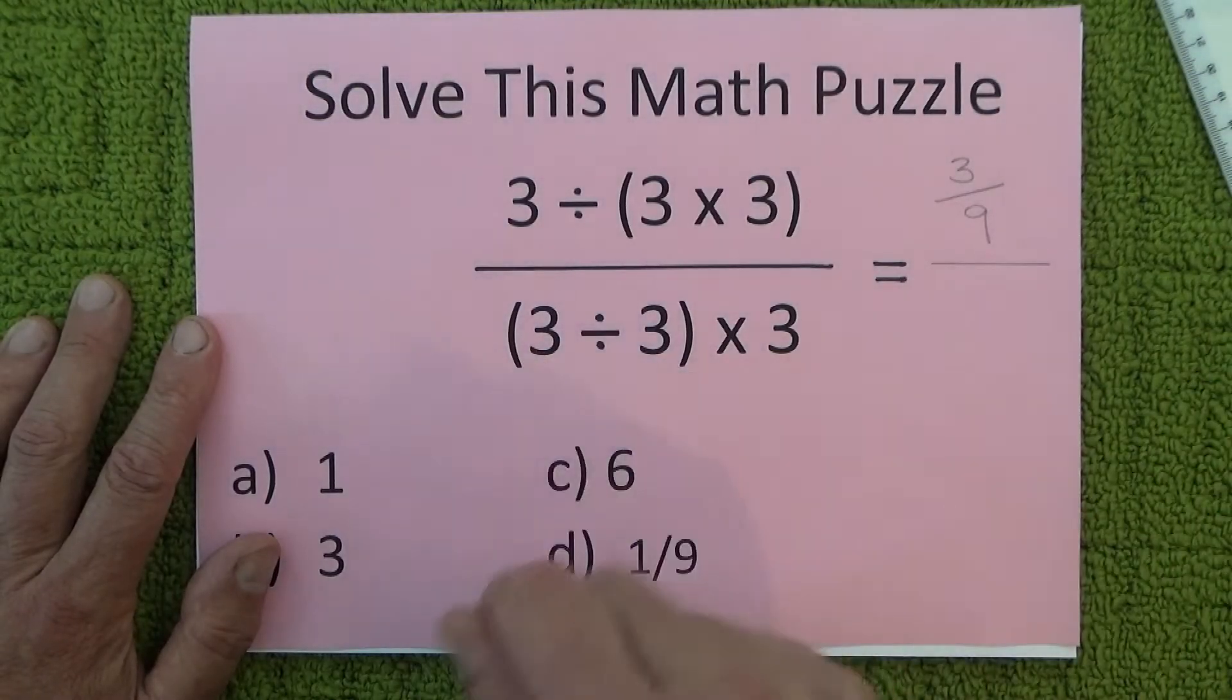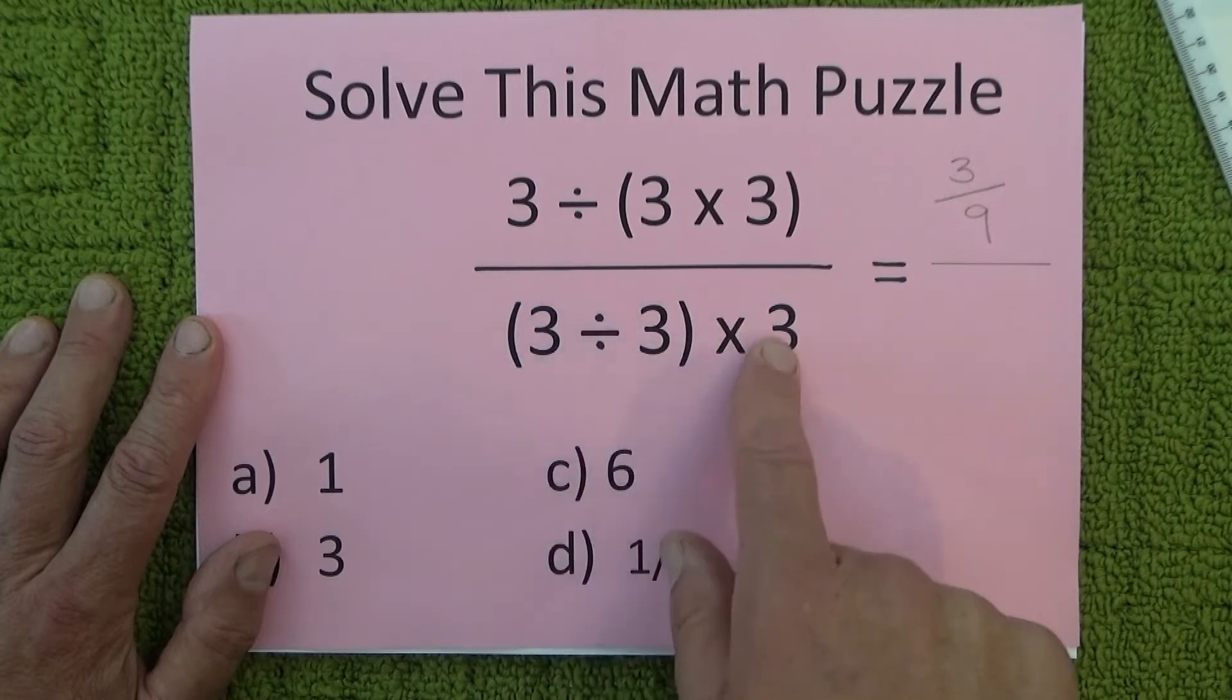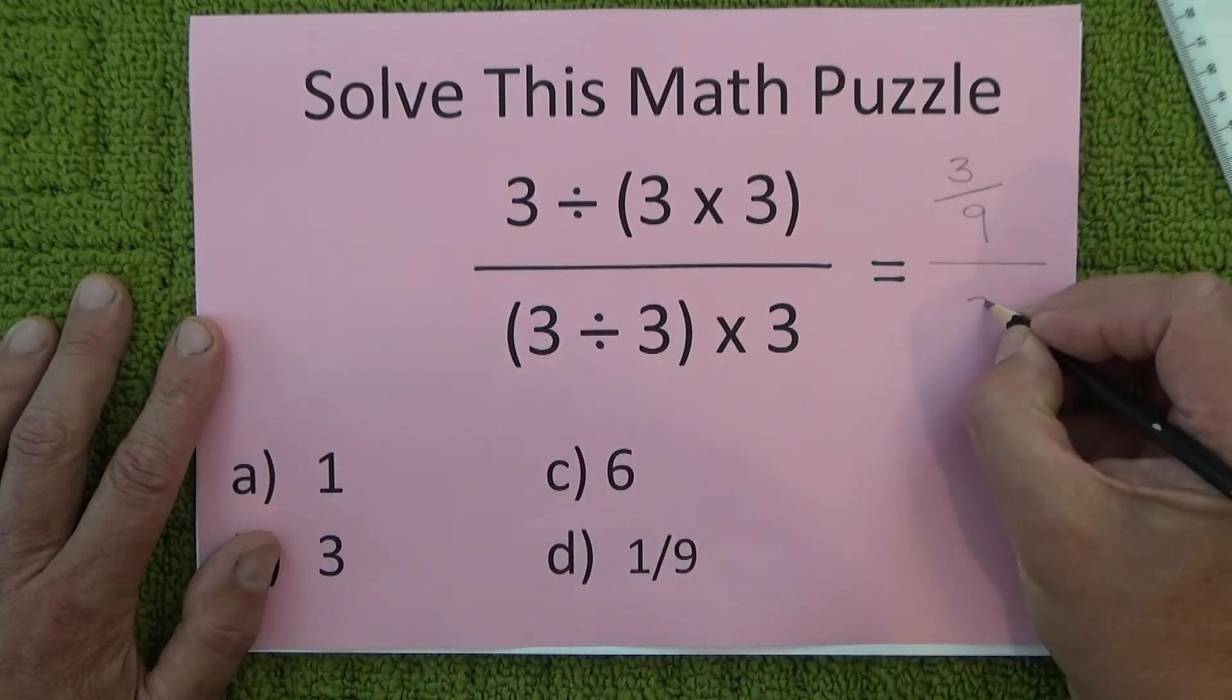So do the brackets first: 3 divided by 3 is 1, and 1 times 3 is 3.